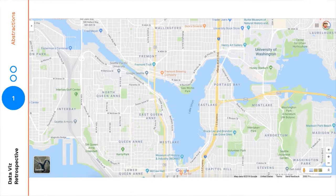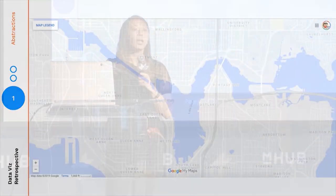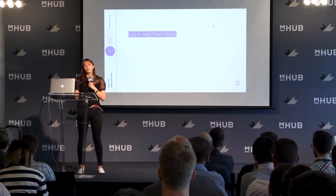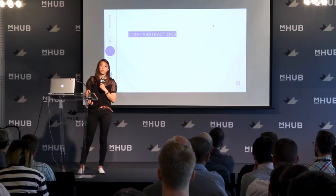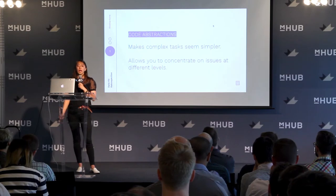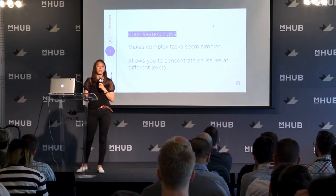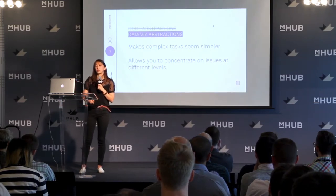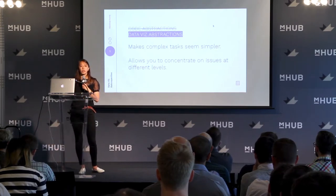I also want to put in this observation: the farther away you get from the data points, the more landmarks you should leave to find your way back. This is what we see in Google Maps — it would be really hard to understand the details if we abstracted too far without leaving those tiers, those landmarks. Another way to think about why we abstract at all is code abstractions: it makes complex tasks seem simpler and allows you to concentrate on issues at different levels. As we go up it's patterns and themes; as we go down it's precision and nuance through example.